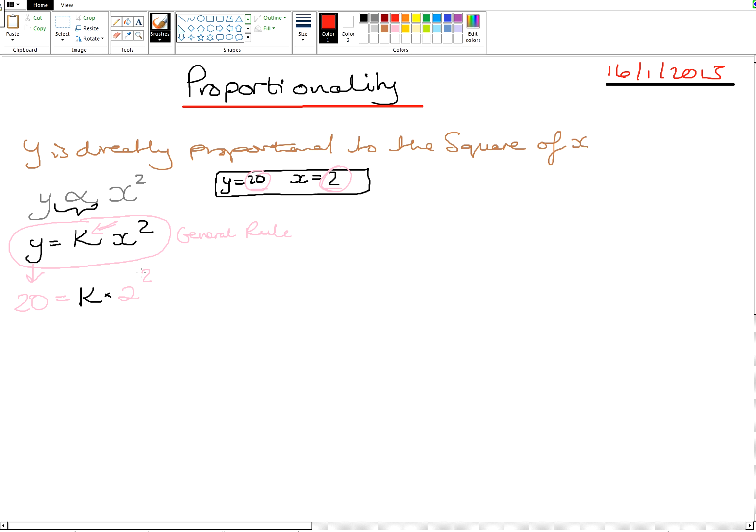So opposite of multiplying by 2 squared is what? It is dividing by 2 squared. So we have 20 divided by 2 squared is equal to 4. 20 divided by 4 is 5. Lovely.